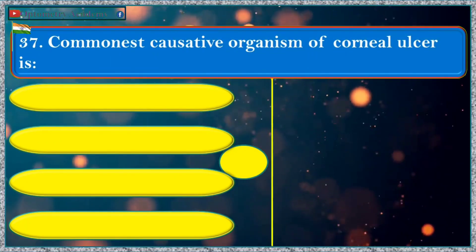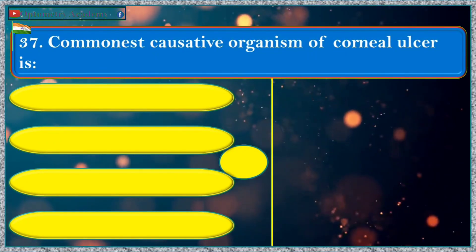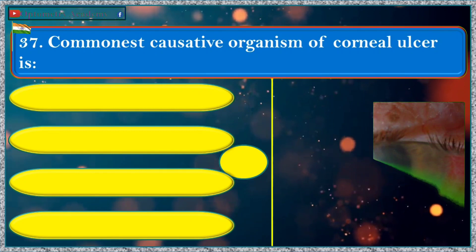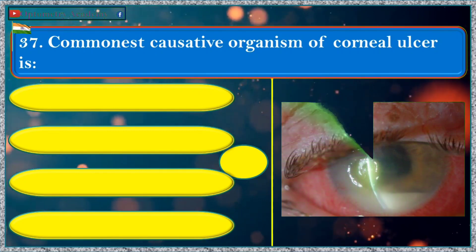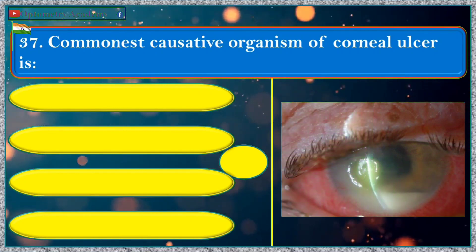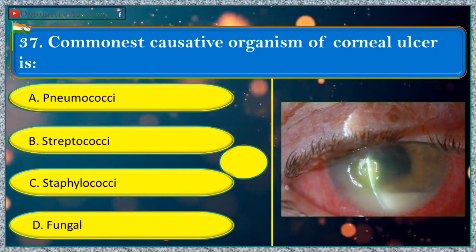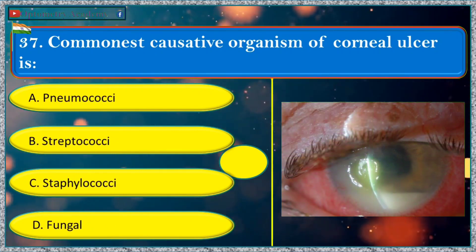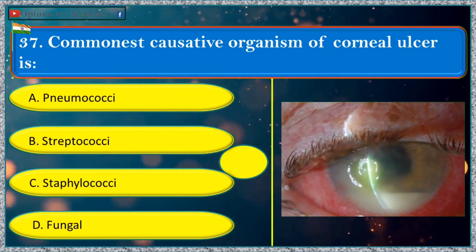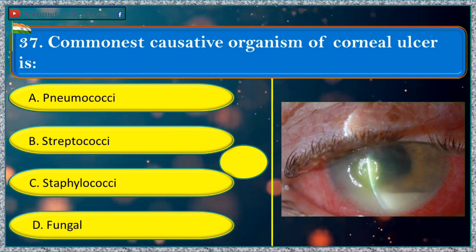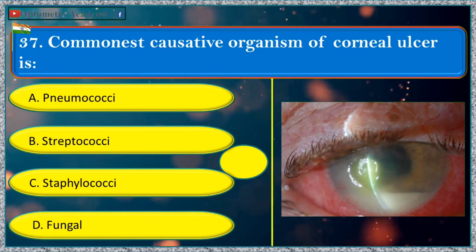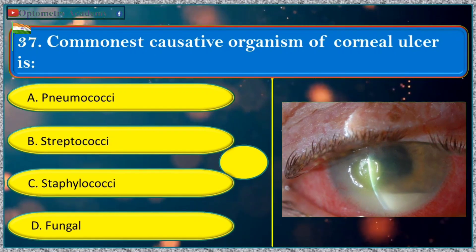Commonest causative organism of corneal ulcer is: a. pneumococci, b. streptococci, c. staphylococci, d. fungal.